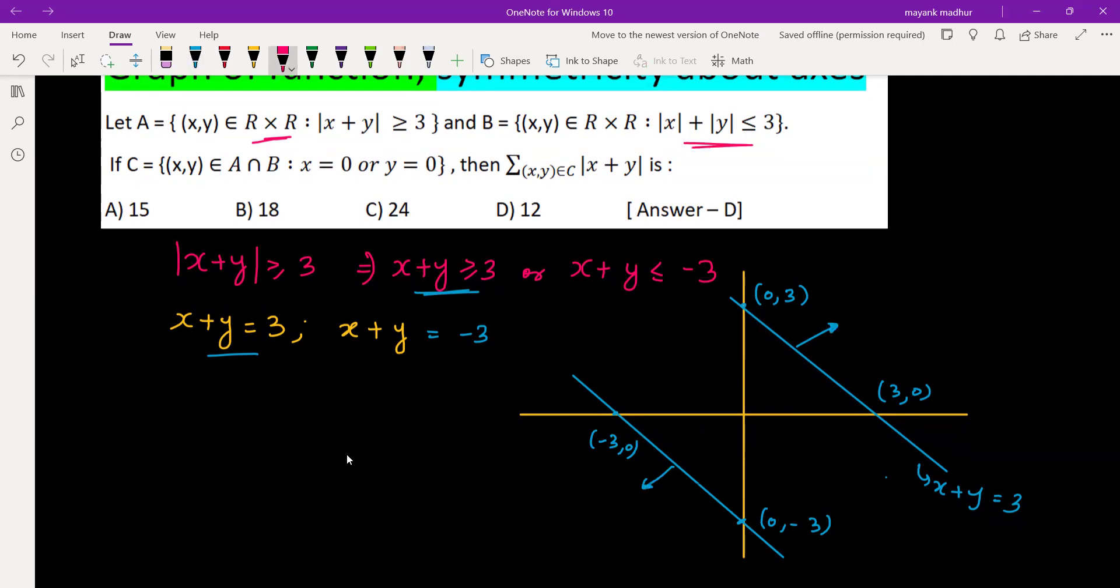Now coming to the second one: mod x plus mod y less than or equal to 3. First case: when x and y both are positive (x > 0, y > 0), we are in the first quadrant and we get x plus y less than or equal to 3.